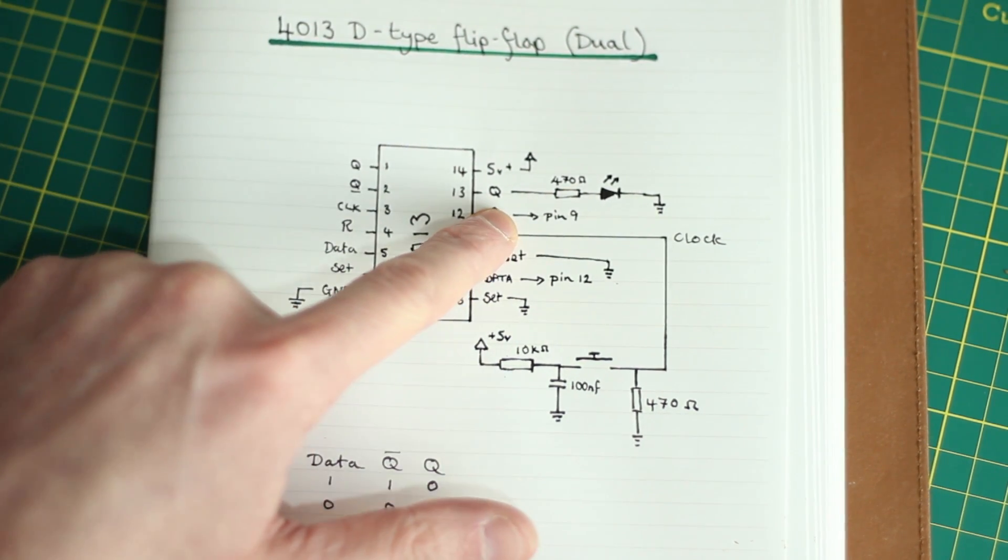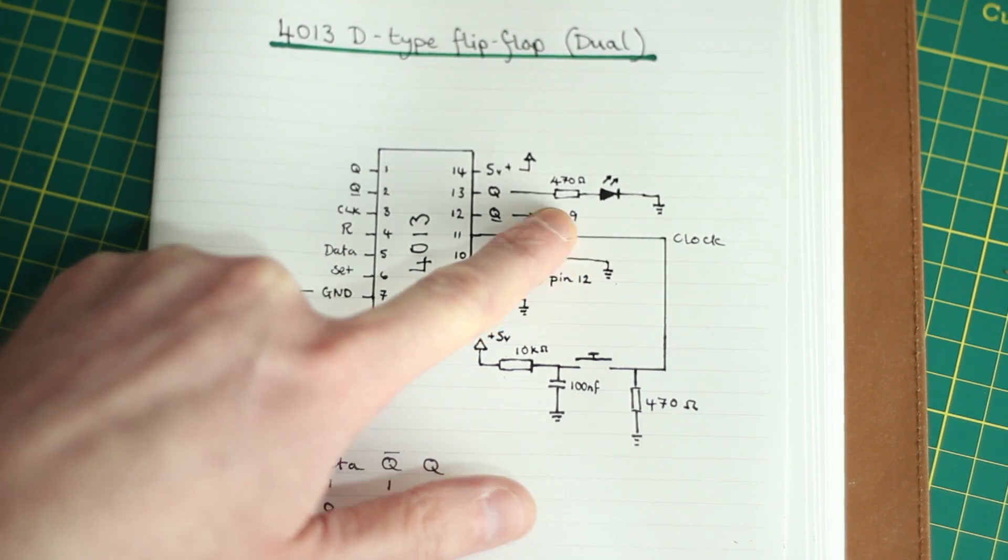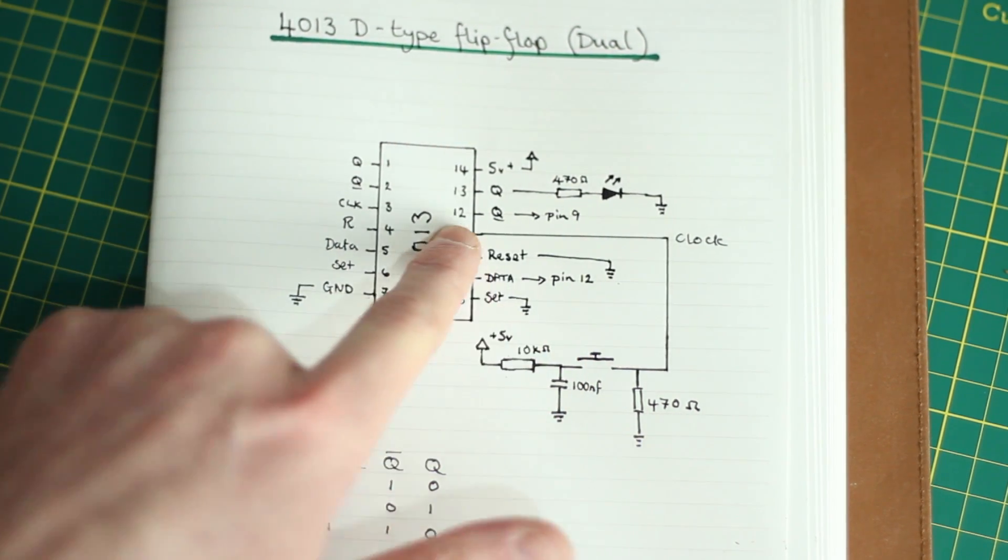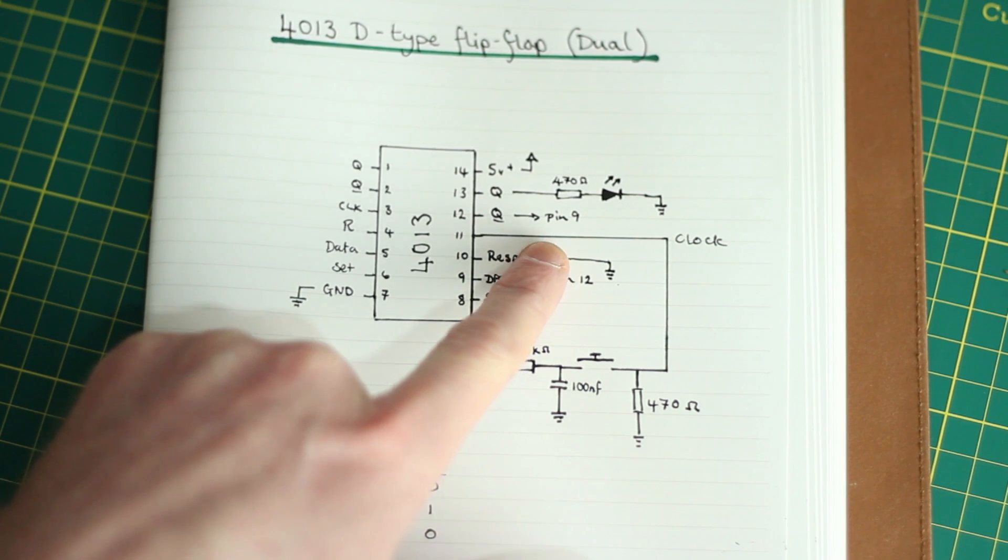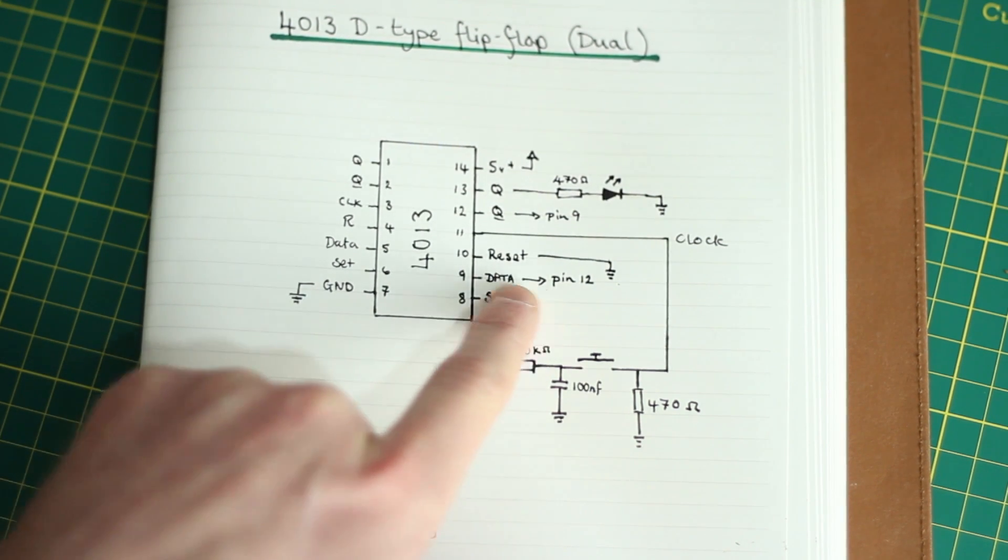So what I've done is on the first output we've got our LED with a 470-ohm resistor going to ground. And then on the second output, we're feeding that—or rather actually it's the other way—the data pin is feeding into the second output.